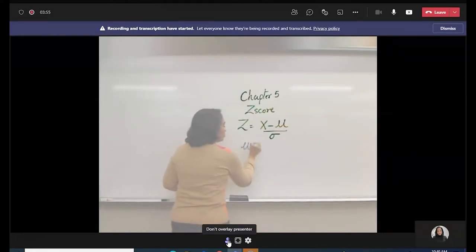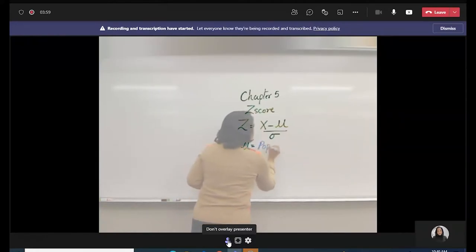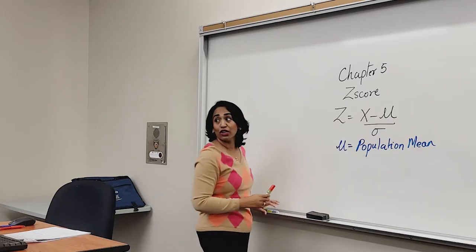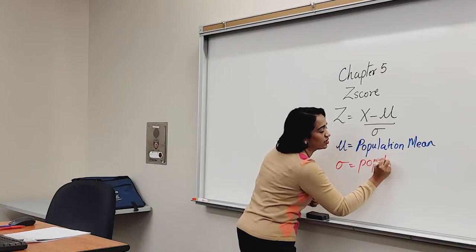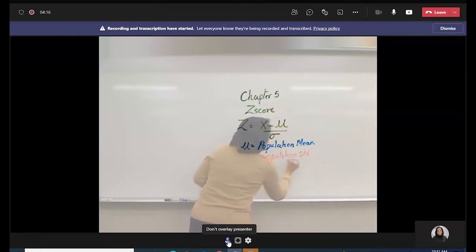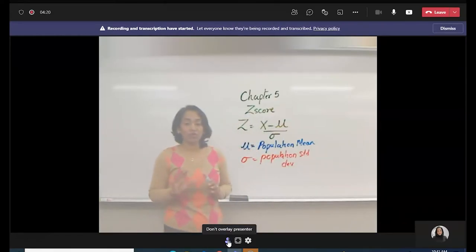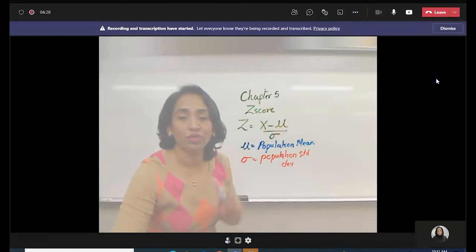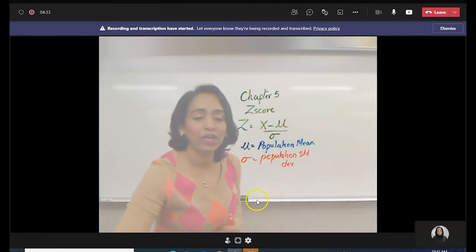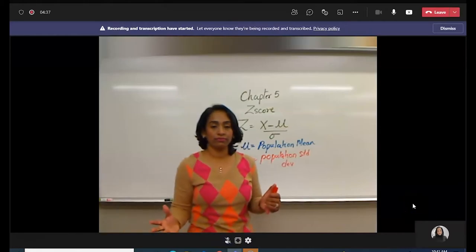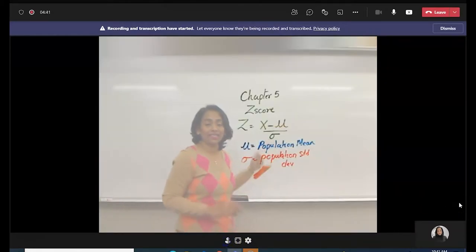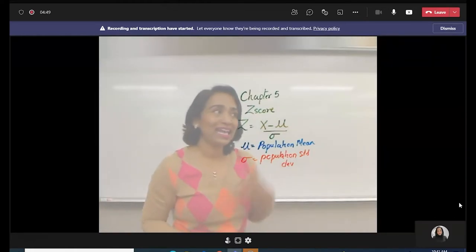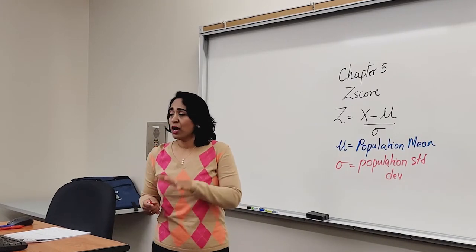Now let's use a different color. Mu is equal to — blue looks good — population mean. Let's use a red color. This is all the colors I have. This is population standard deviation. As you can see, when I overlay myself, it's kind of focusing on the writing. Let me make sure I started the recording — yes, I did, just always cross-checking. As you can see, it's ghosting me. But if you want to talk to your students, maybe go back here and click don't overlay presenter. And now let's go back and see overlay presenter — it's highlighting the text. It does show the black properly, the blue colors, and the red. I'm only looking forward to seeing the recording to see the quality, but so far Microsoft did a good job.